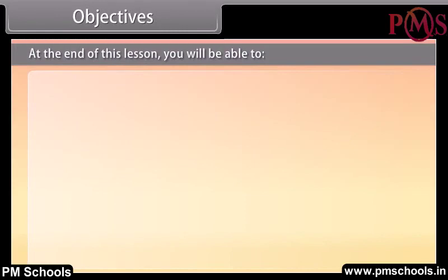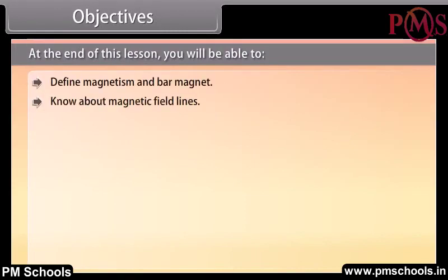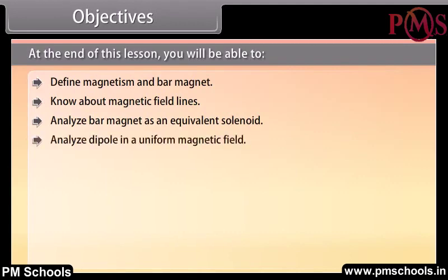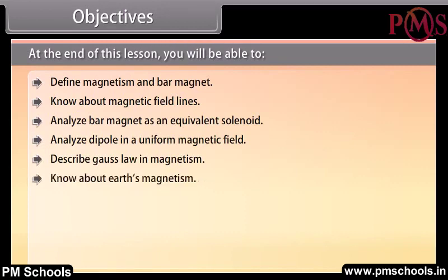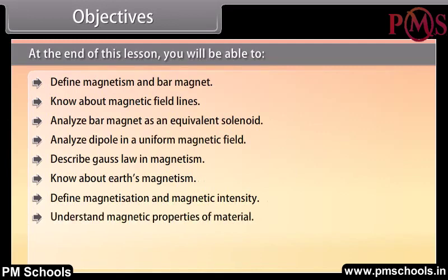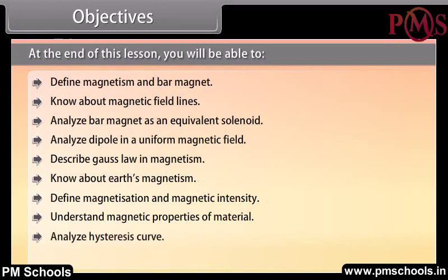At the end of this lesson you will be able to: define magnetism and bar magnet; know about magnetic field lines; analyze bar magnet as an equivalent solenoid; analyze dipole in a uniform magnetic field; describe Gauss's law in magnetism; know about Earth's magnetism; define magnetization and magnetic intensity; understand magnetic properties of material; and analyze hysteresis curve; describe permanent magnets and electromagnets.